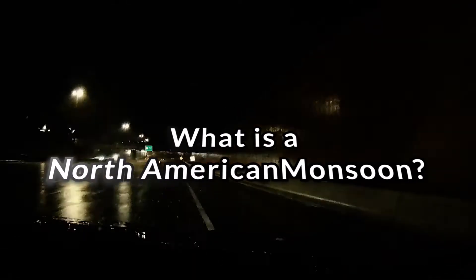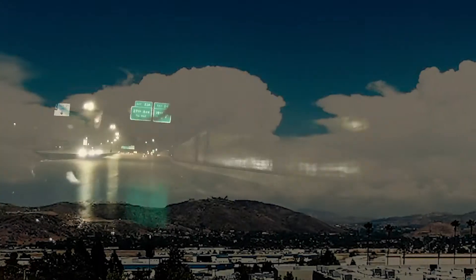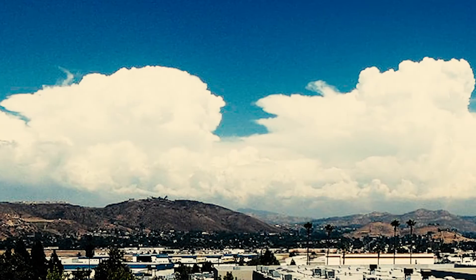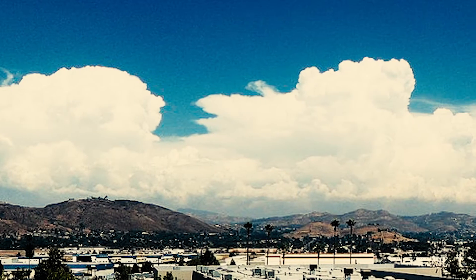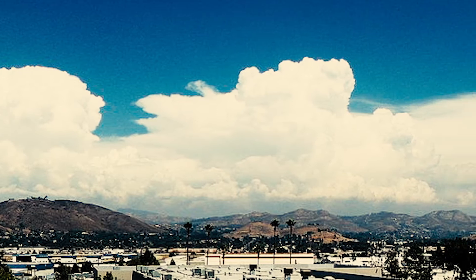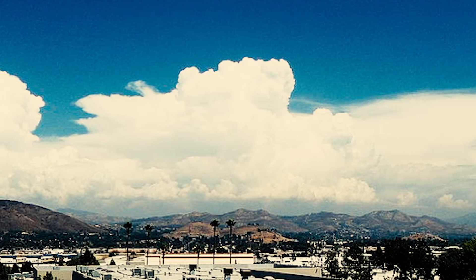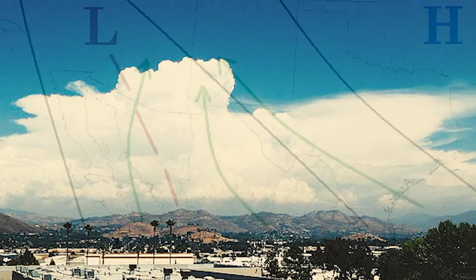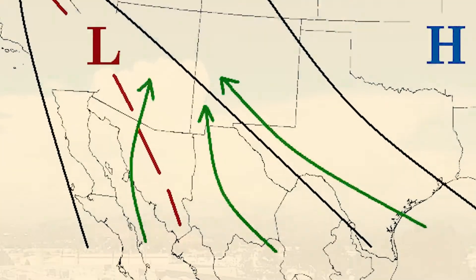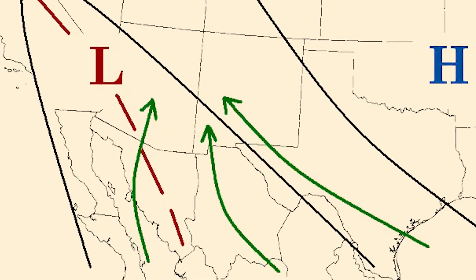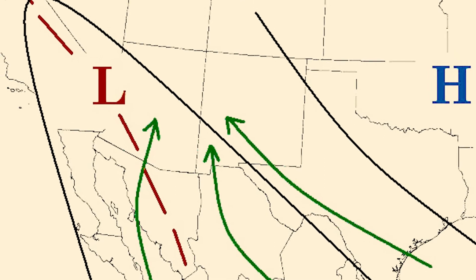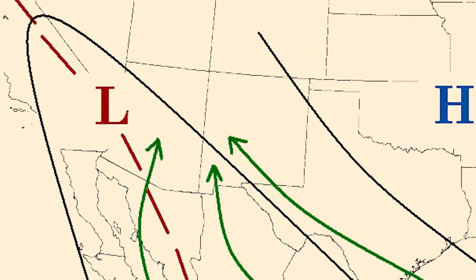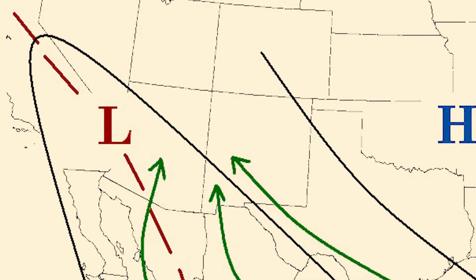What is a North American monsoon? The North American monsoon, variously known as the Southwest, the Mexican, the New Mexican, or the Arizona monsoon, is a pattern of pronounced increase in thunderstorms and rainfall that affects large areas of the southwestern United States and northwestern Mexico.